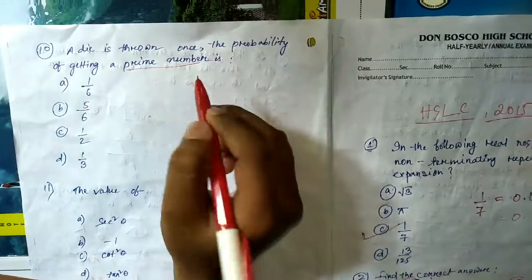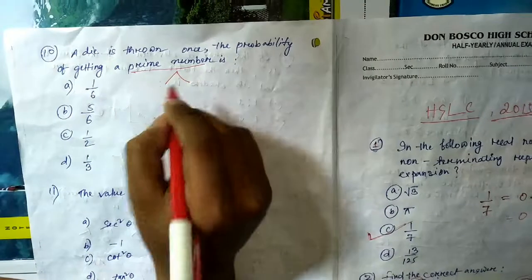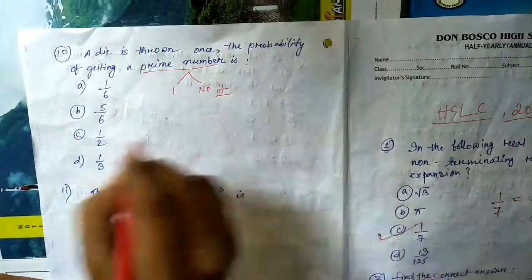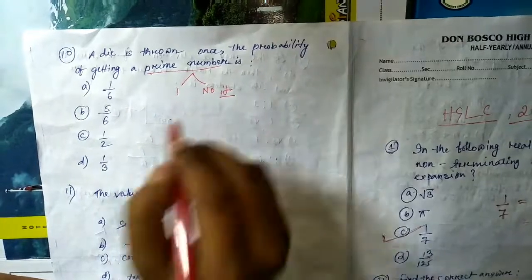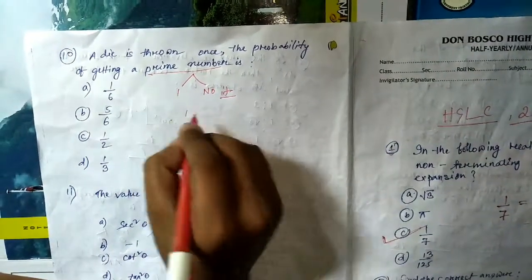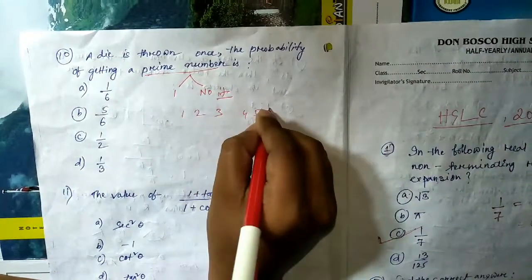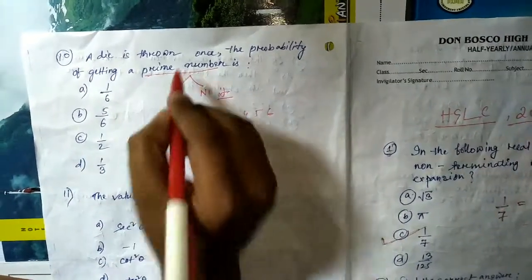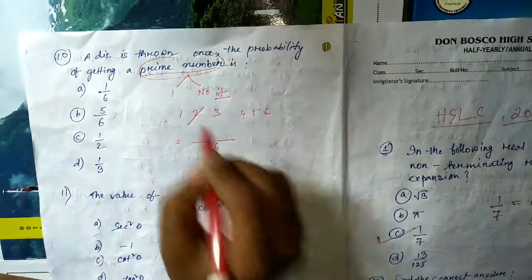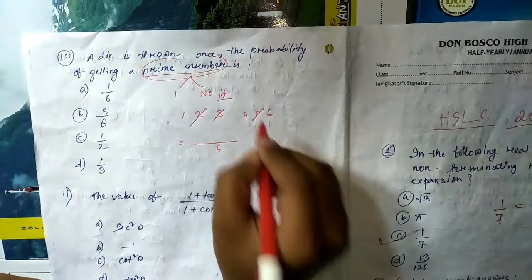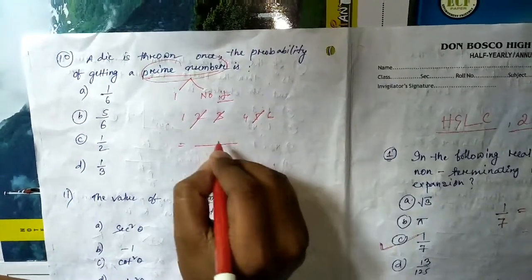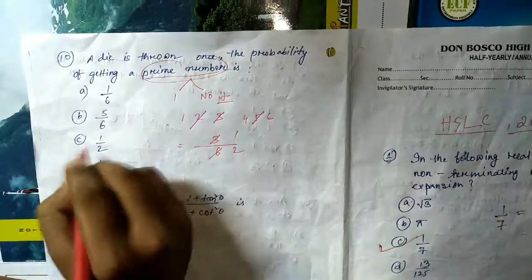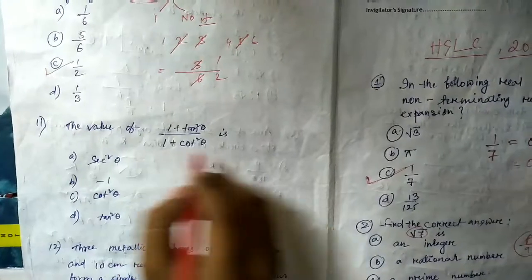Question number ten: a die is thrown once. Find the probability of getting a prime number. A prime number has only two factors: 1 and itself. When a die is thrown, total outcomes are 1, 2, 3, 4, 5, 6 — that is 6. The prime numbers among these are 2, 3, and 5 — that is 3 favorable outcomes. So the probability is 3/6 = 1/2.